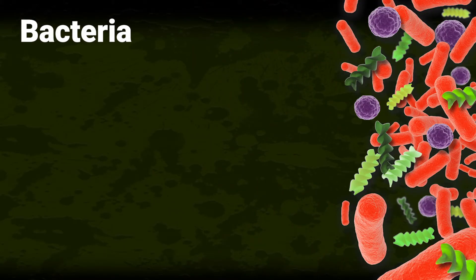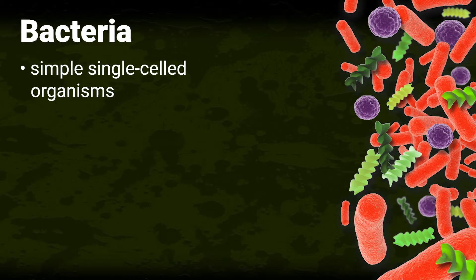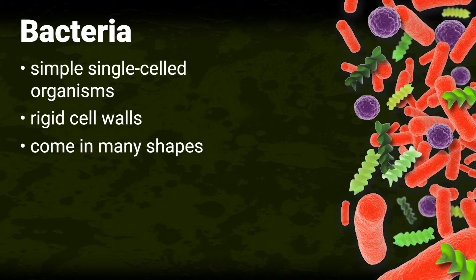Bacteria. Bacteria are simple, single-celled organisms with rigid cell walls. Bacteria come in many shapes, such as rods, spheres, and spirals.